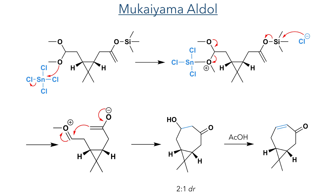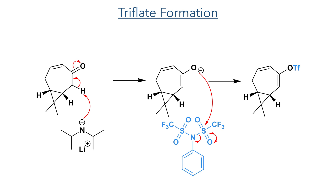Reaction with acetic acid caused an elimination reaction to generate the target alpha-beta unsaturated enone. To carry out the carbonylation reaction, a triflate group was required. LDA was used to deprotonate the alpha proton and the enolate was then trapped using bis(trifluoromethanesulfonyl)aniline, which installs a triflate group on the anionic oxygen.